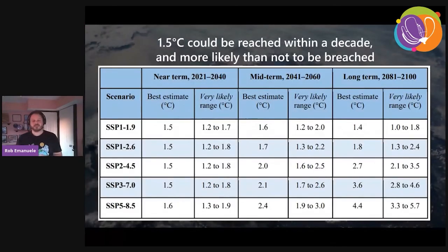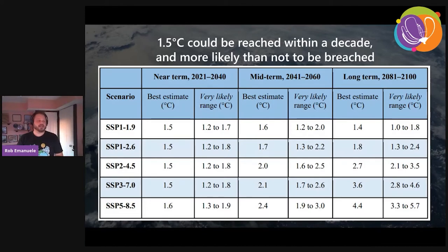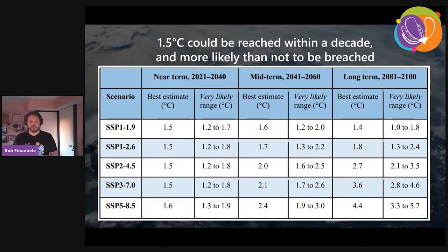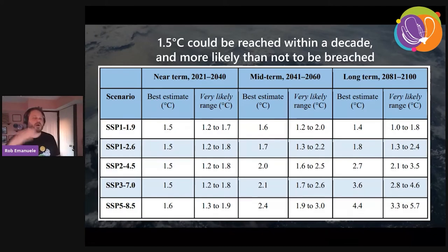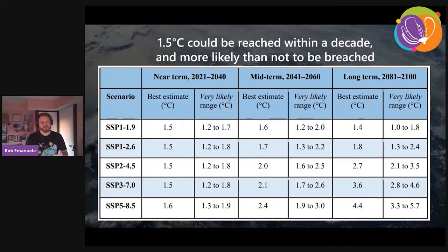One of the key takeaways is that 1.5 degrees Celsius above pre-industrial average could be reached within a decade and is more likely than not to be breached — even in the scenario where we get to net zero by 2050 with aggressive cutting of carbon as well as removing carbon from the air. That number is important because in 2015, during COP 21, the Paris Agreement entered into force in 2016 with a goal of keeping global warming well below 2 degrees Celsius, preferably below 1.5 degrees Celsius. And it looks like we've already missed that mark five years later.